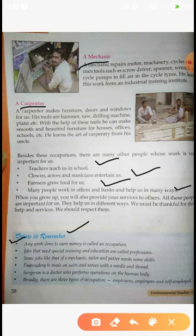Ab hum kuch important points yaad karenge. First: any work done to earn money is called an occupation. Koi bhi kaam money earn karne ke liye kiya jata hai, use hum occupation bolte hain. Second: jobs that need special training and education are called professions. Jis kaam mein special training aur education ki zaroorat hoti hai use hum profession bolte hain.